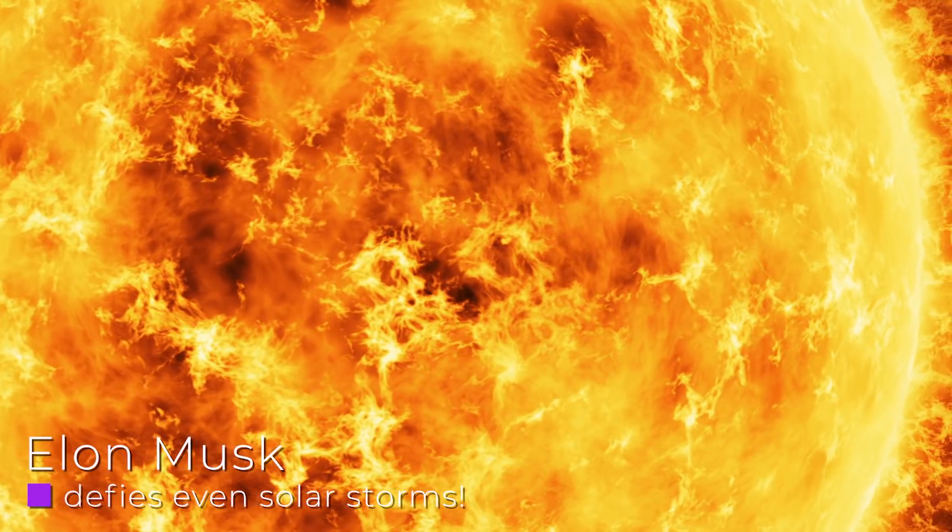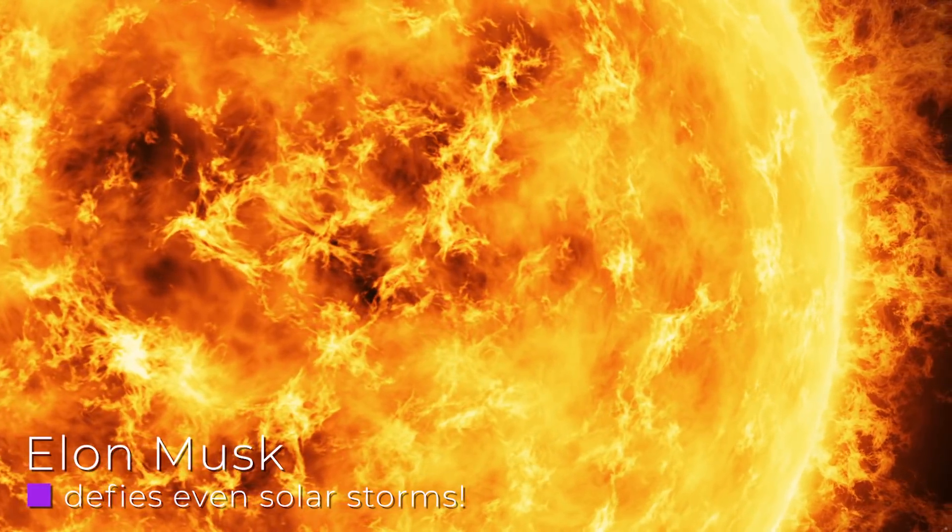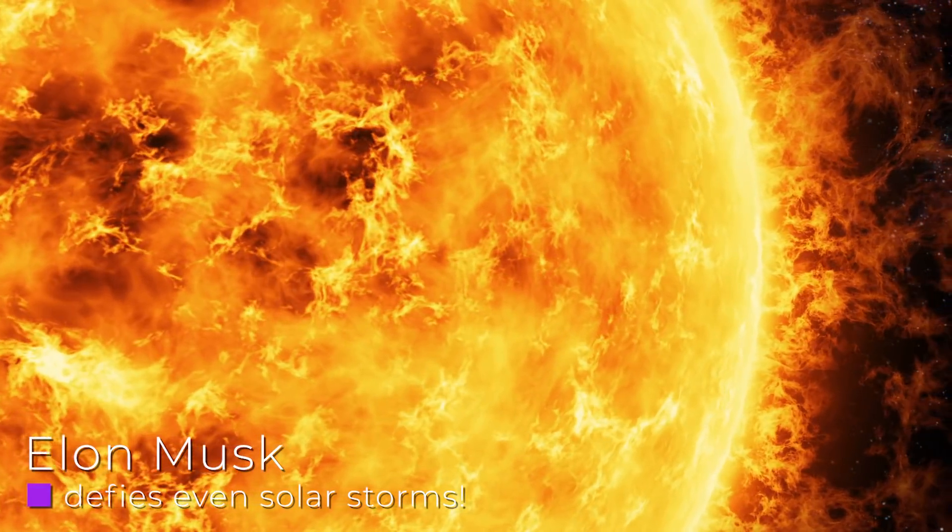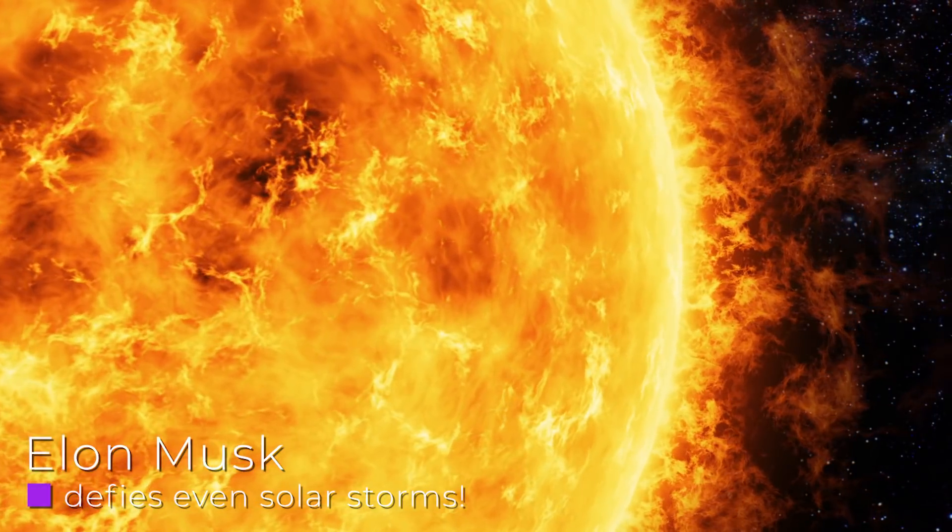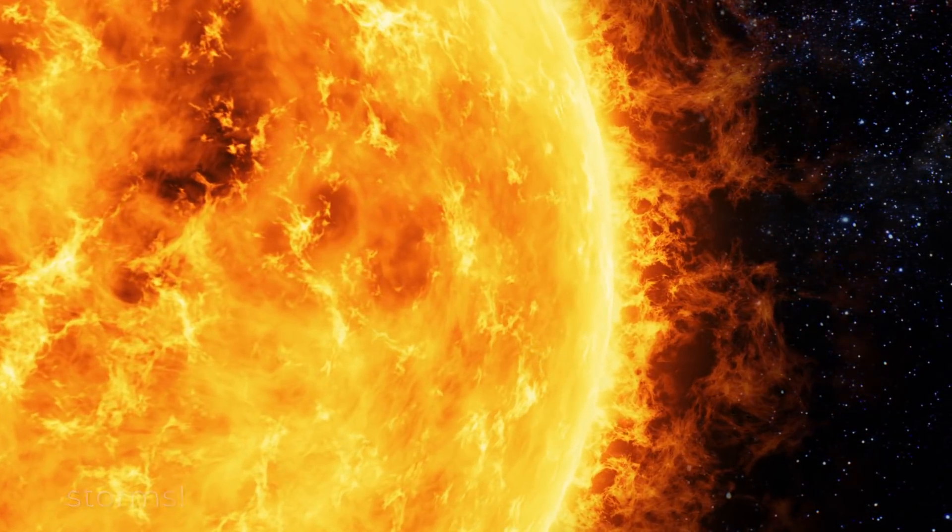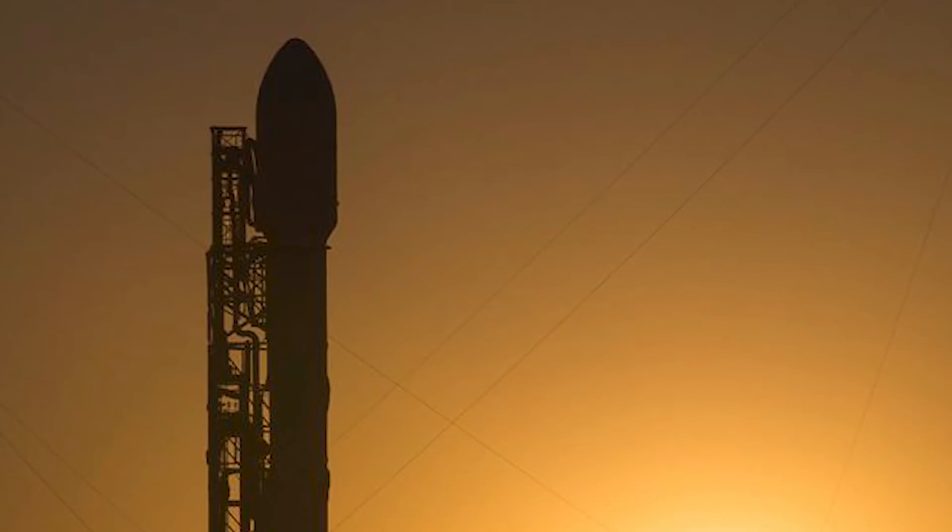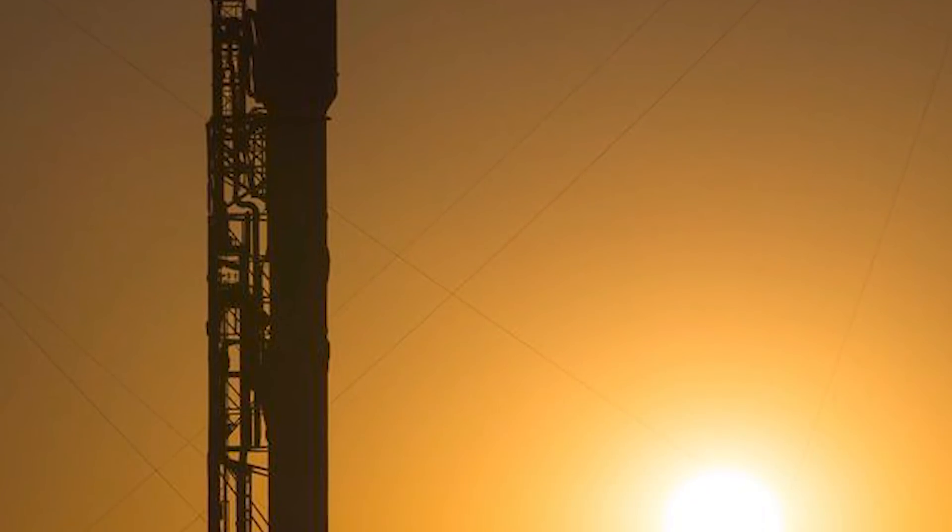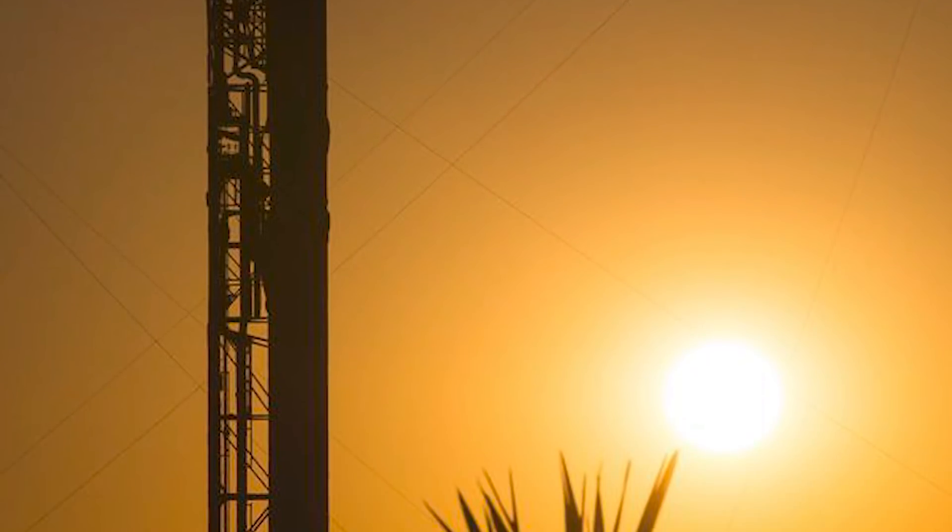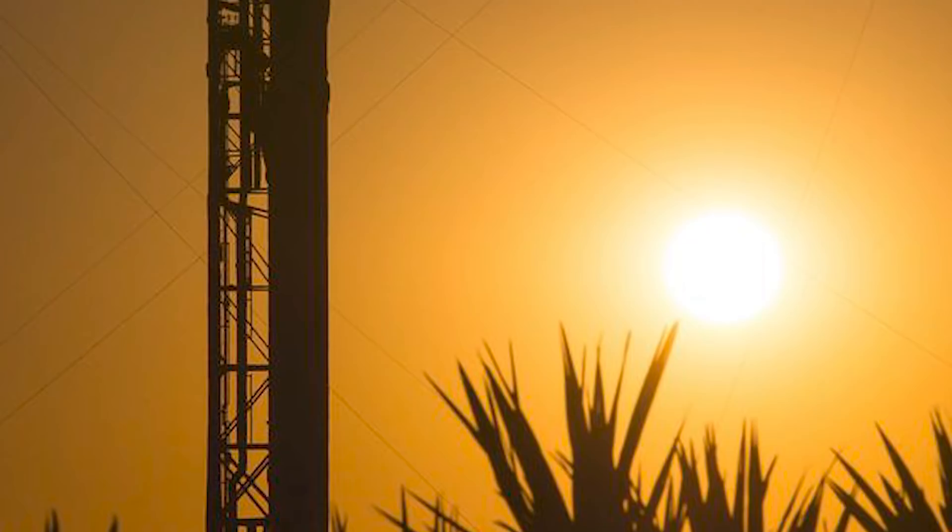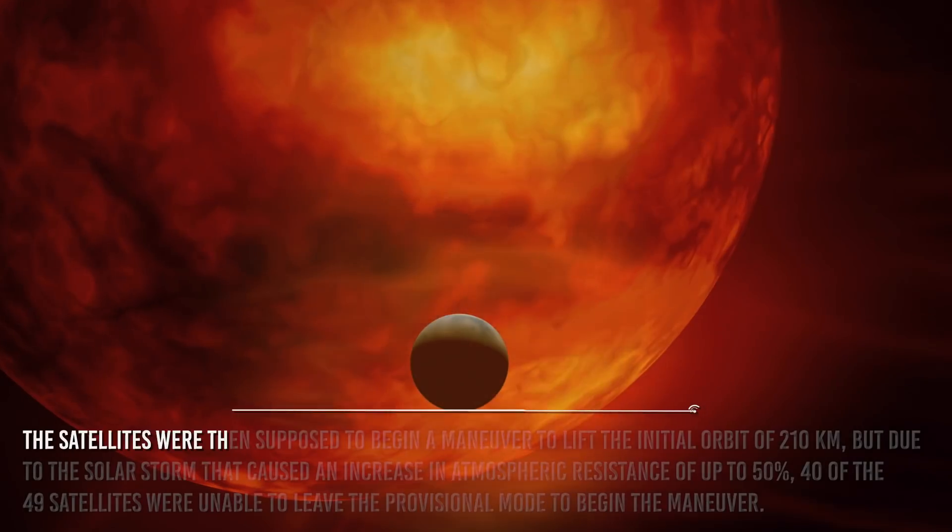Elon Musk defies even solar storms. According to a note issued by SpaceX, 40 satellites were irreparably damaged due to the magnetic storm caused by an intense solar flare on January 30. The 40 satellites were part of a set of 49 units launched with a Falcon 9 in the context of the Starlink project on February 3.